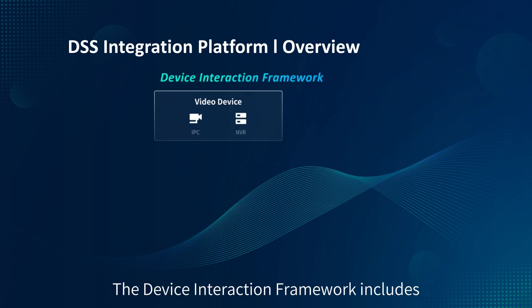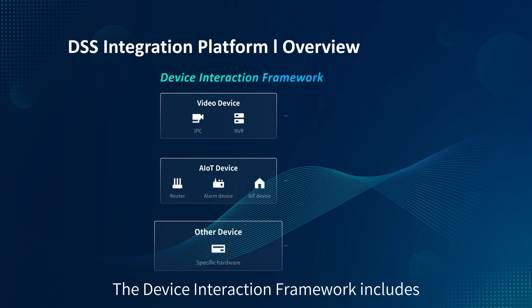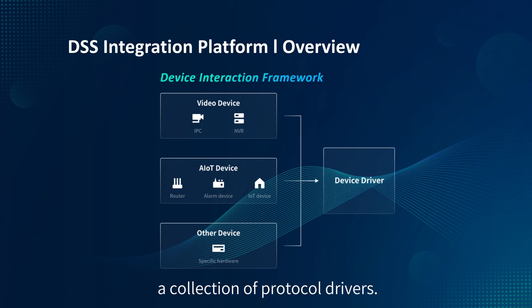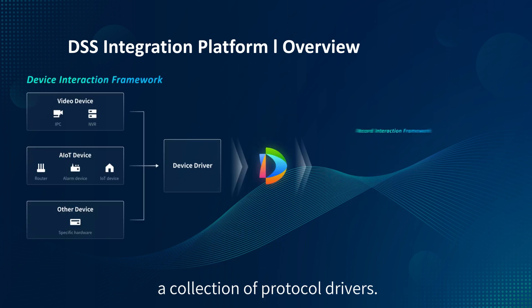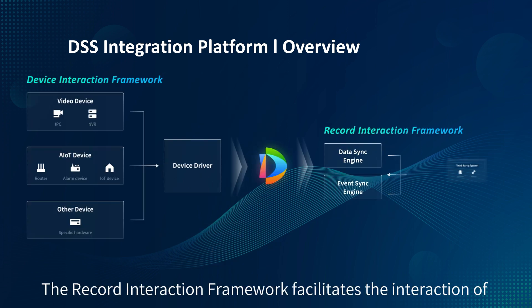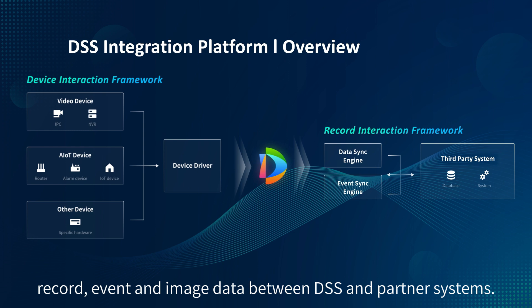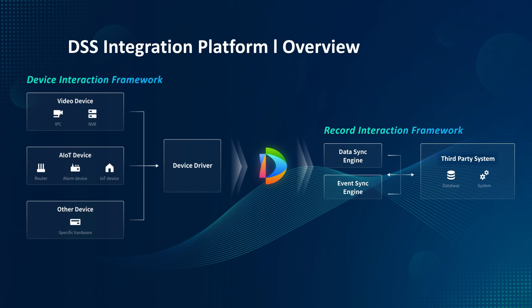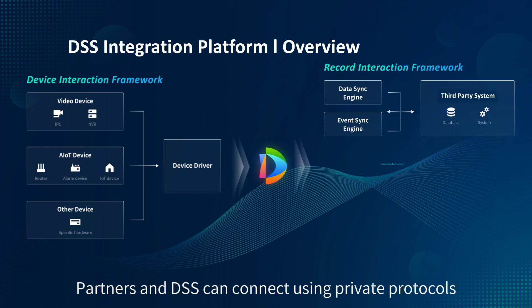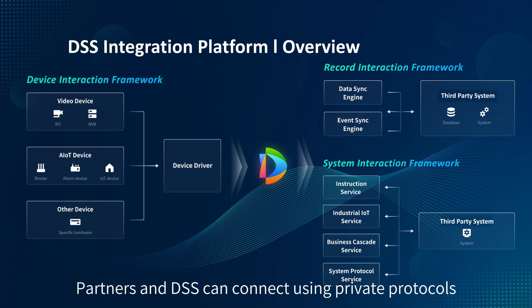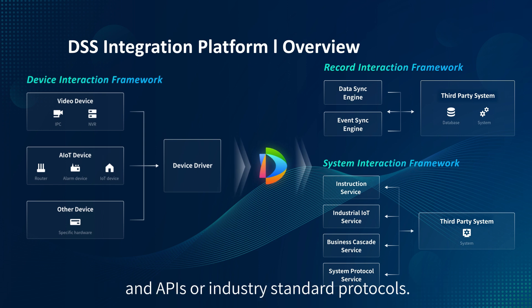The device interaction framework includes a collection of protocol drivers. The record interaction framework facilitates the interaction of record, event, and image data between DSS and partner systems. Partners and DSS can connect using private protocols and APIs or industry standard protocols.